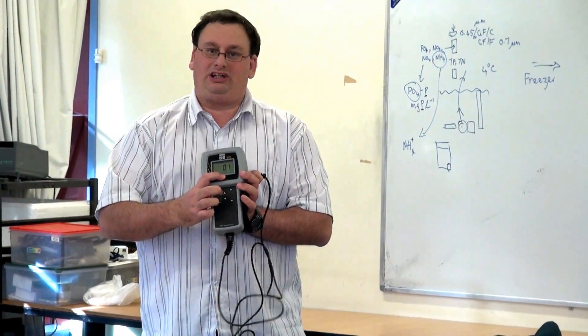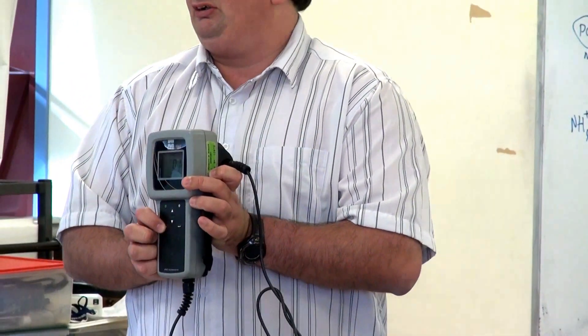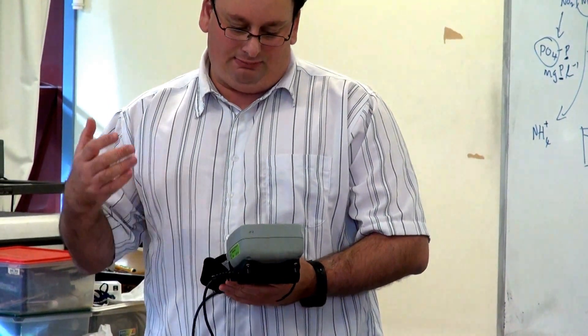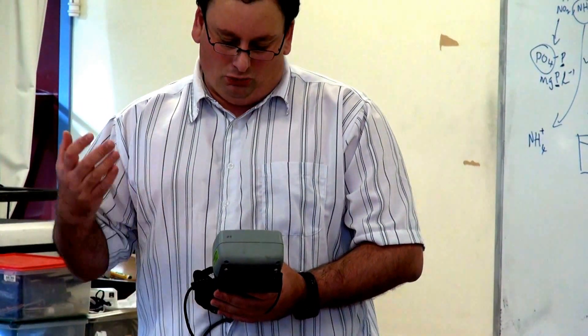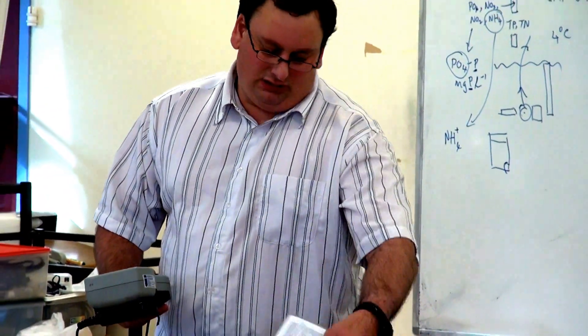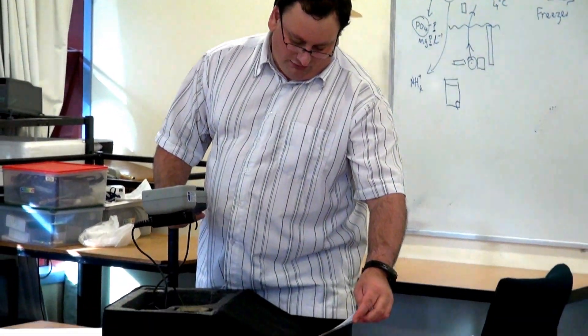So you just use these buttons to go up and down to calibrate it. So if you want to change the salinity, again, just up and down mode to change what's appearing, whether it be percentage, oxygen, or salinity. All the instructions for it are actually on here, so they should be really easy to follow.